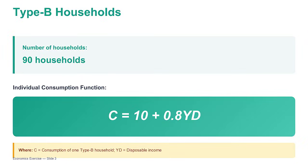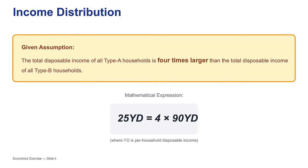Now Type B is much larger — there are 90 of them, almost four times as many households as Type A. Their function is different too: C sub B equals 10 plus 0.8YD. Their autonomous consumption, that baseline, is only 10 — half of what Type A spends. So they're more cautious at the baseline, but their MPC is 0.8 — much higher. They spend 80 cents of every new dollar they get. A lower floor, but much more eager to spend any extra income.